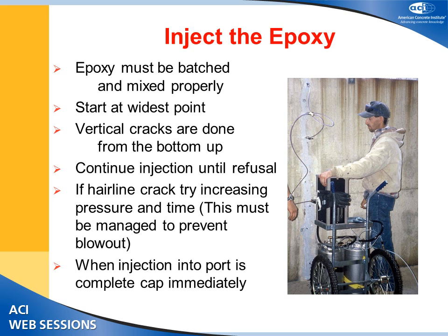Injection typically starts at the widest point. For vertical cracks, inject from the bottom up, continuing until epoxy appears at the next port above. For very fine cracks, you can increase injection time, but be careful — increasing time and pressure excessively can have negative consequences. When injection at one port is complete and epoxy is seen coming from the adjacent port, go back and crimp that port to seal it off.